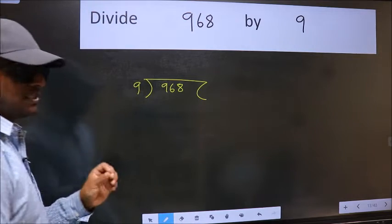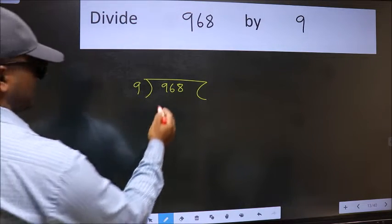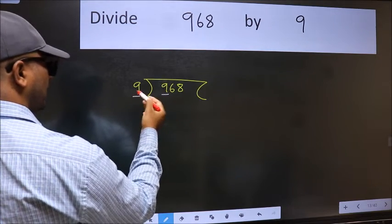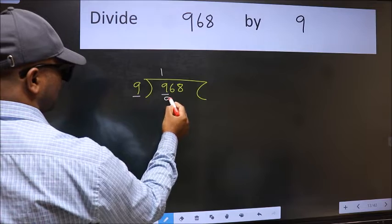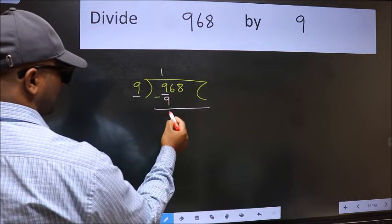This is your step 1. Next. Here we have 9 and here 9. When do we get 9 in the 9 table? 9 once 9. Now we should subtract. We get 0.